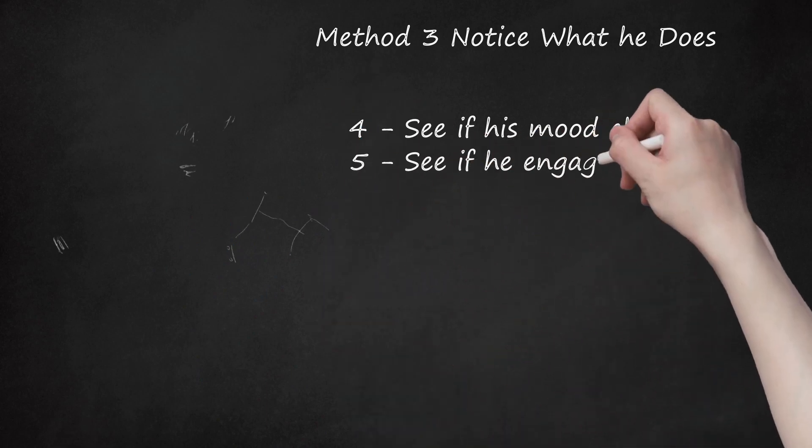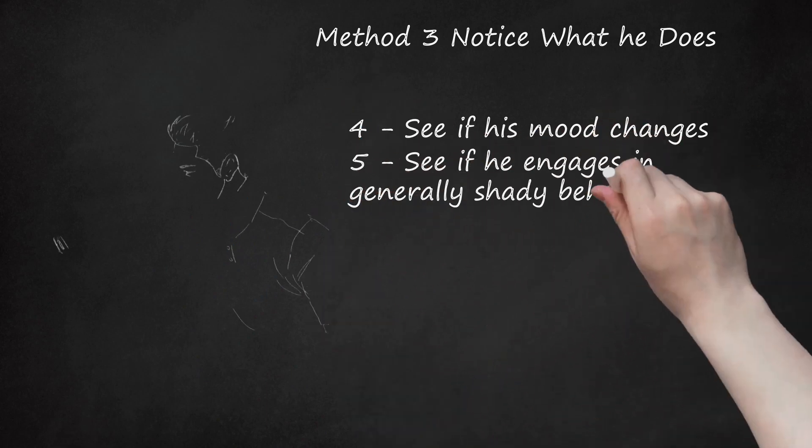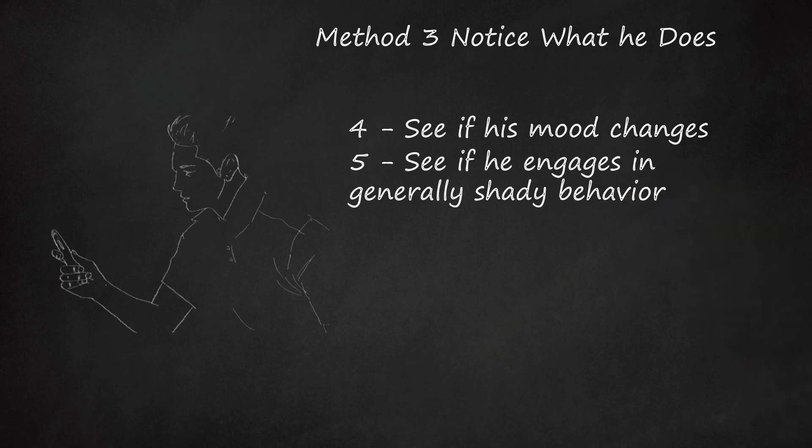See if he engages in generally shady behavior. Shady behavior is pretty easy to spot, and if he's doing at least a few shady things, then it can only add up to him sneaking around to spend time with another girl. Here are some signs. If he's spending a lot of time texting and on the phone. If he stops texting or ends his phone call as soon as you leave the room. If he's suddenly spending a lot of time online. This could be a sign that he's chatting it up with another girl. If he slams his computer shut when you walk into a room, that is a bad sign.